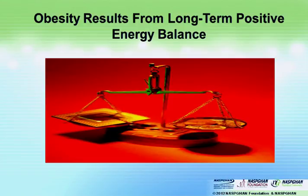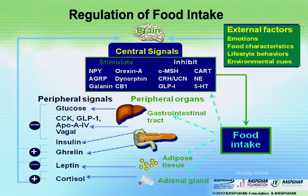In a nutshell, obesity results from a change in energy balance. It's important to keep in mind that there are a variety of gut peptides that will influence food intake, including glucose itself, that will have either a negative or positive feedback to the brain, the hypothalamus, and either the ventromedial or arcuate nuclei, which will either stimulate or inhibit food intake centrally.